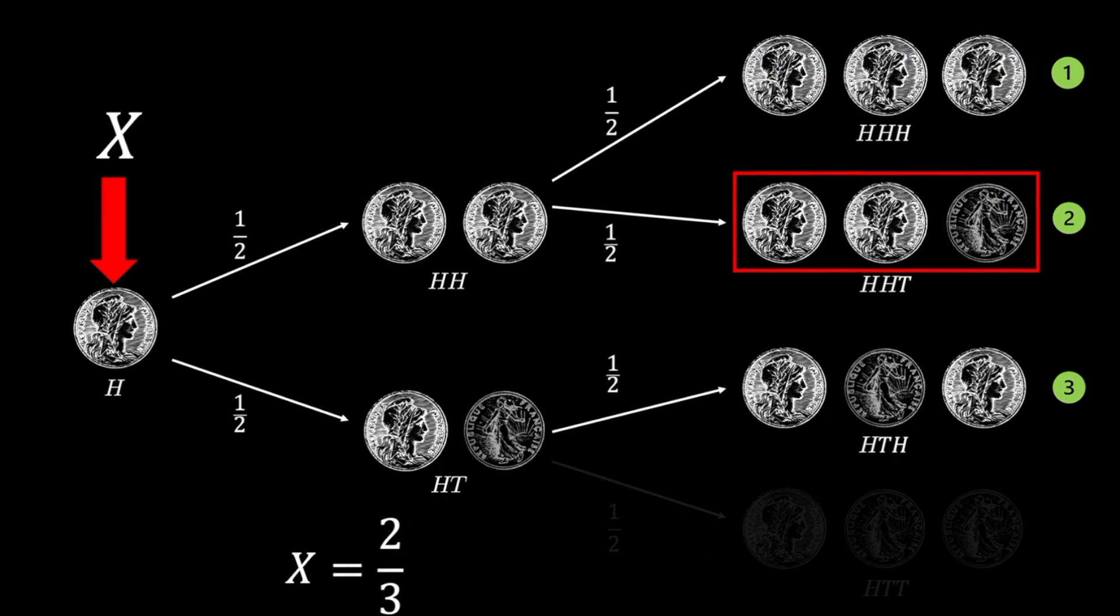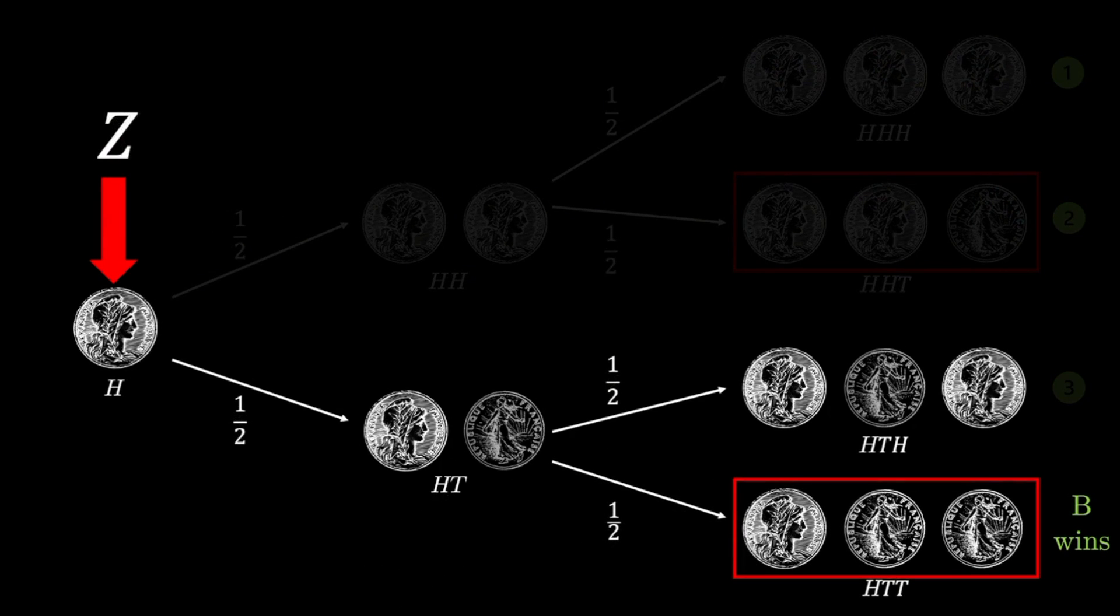For completeness, let's also find Z, the probability of B winning this game. Setting up the recurrence relation, Z evaluates to 1/3, which together with the 2/3 of A winning, this sums to 1, representing the probability of the sample space either A or B winning.